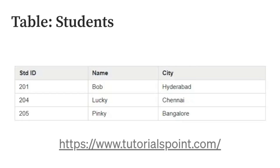Look at this example here. The table name is 'students,' and that describes the information inside the table. From there, we have our header for each column, which describes the information located in the column. We have STDID, which is a student ID, name, and city. Then we have three rows of information — student ID 201, name of Bob, and city of Hyderabad — all part of one record or row.